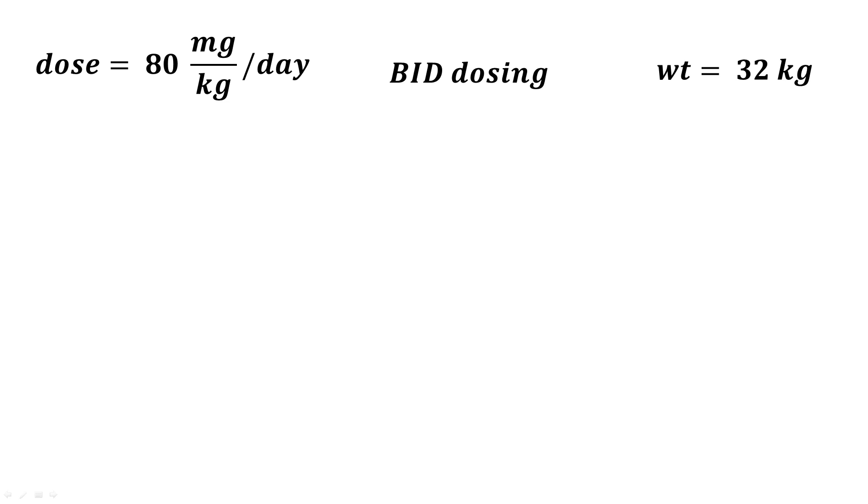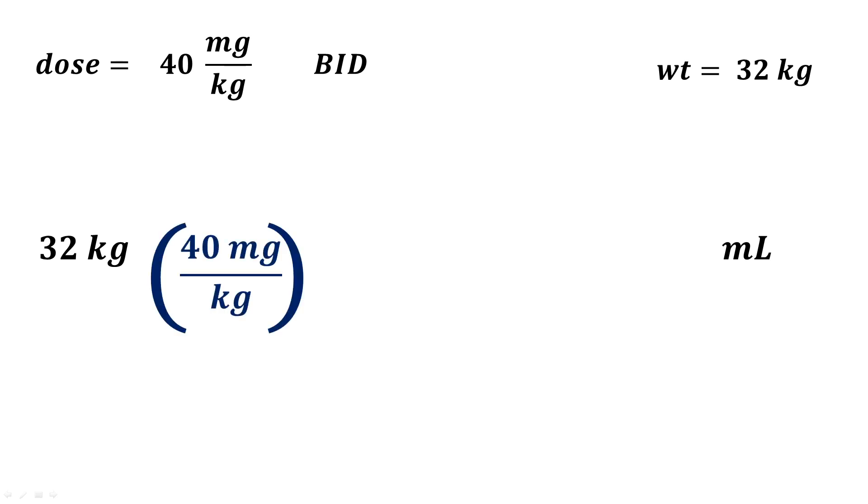The information you've been given is the weight of your patient which is 32 kilograms. The information you're trying to find is how many milliliters per dose do you want to give them. Since we're going to be utilizing BID dosing, first we divide our daily dose by two to give us our individual dose amount. What we end up with is 40 milligrams per kilogram and this is our first conversion factor. We line that up in our equation so that we can cancel out the kilograms.